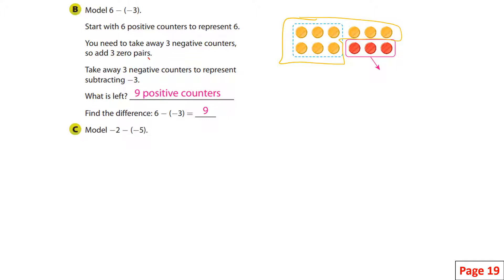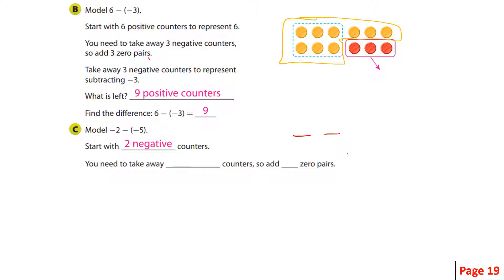Negative two take away negative five, or two negatives take away five negatives. You start with two negative counters — negative is red — so one, two: two negative counters. Then I'm going to try to take away five negative counters.